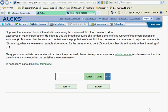In this segment of the purple slice, we will be looking at choosing an appropriate sample size. Here's our story. Now, suppose that a researcher is interested in estimating the mean systolic blood pressure mu of executives of major corporations.